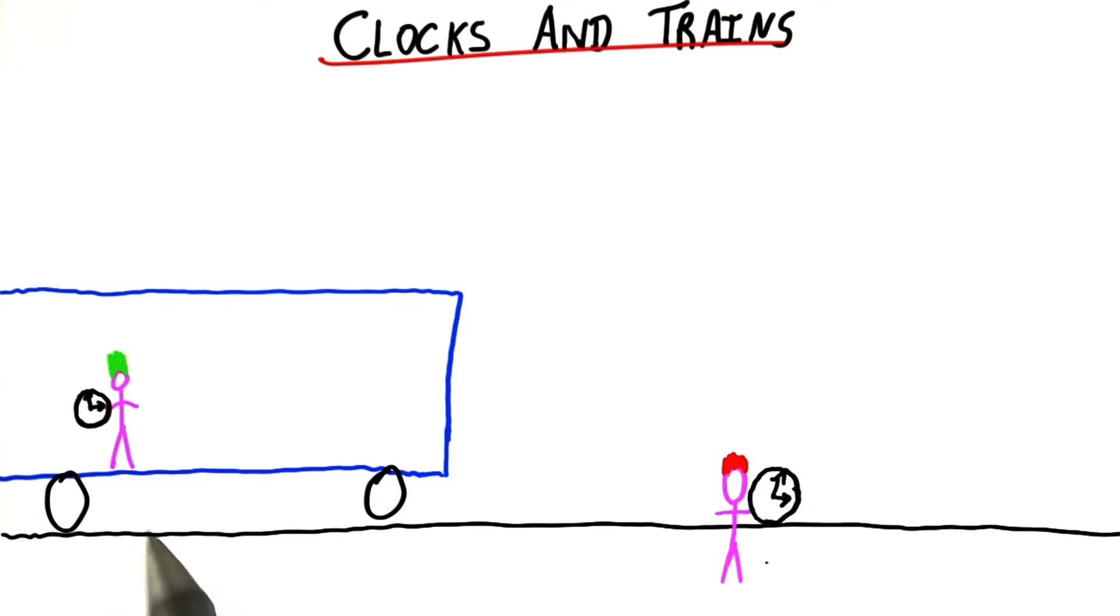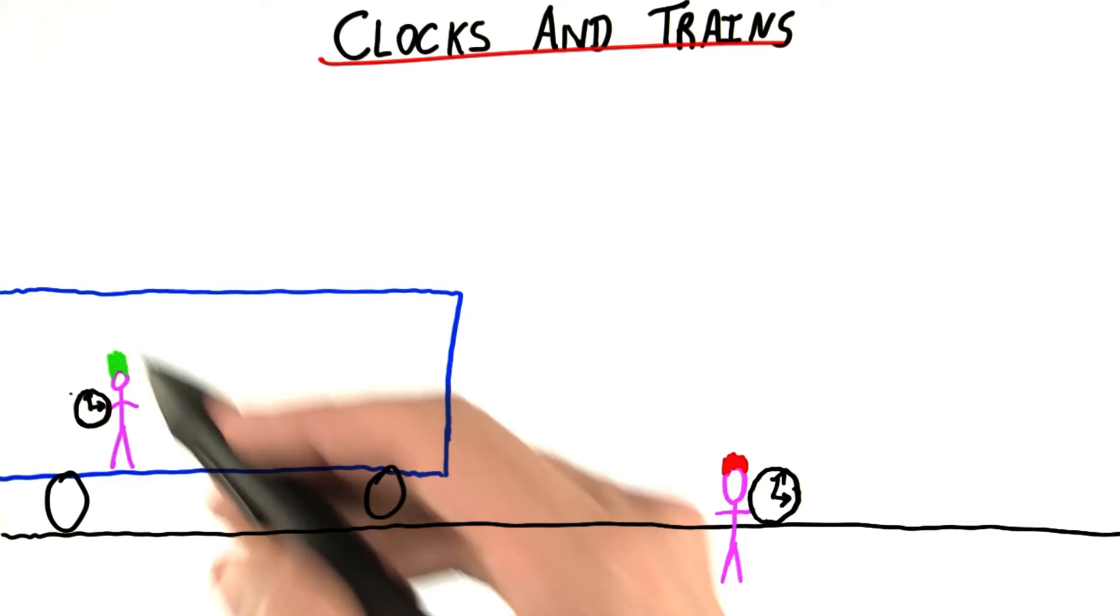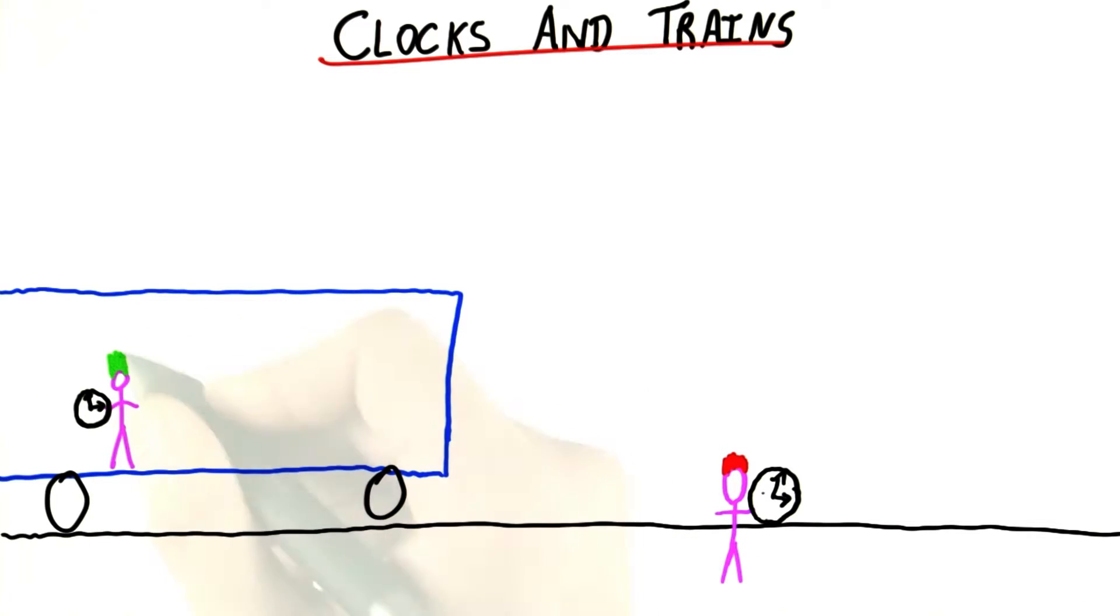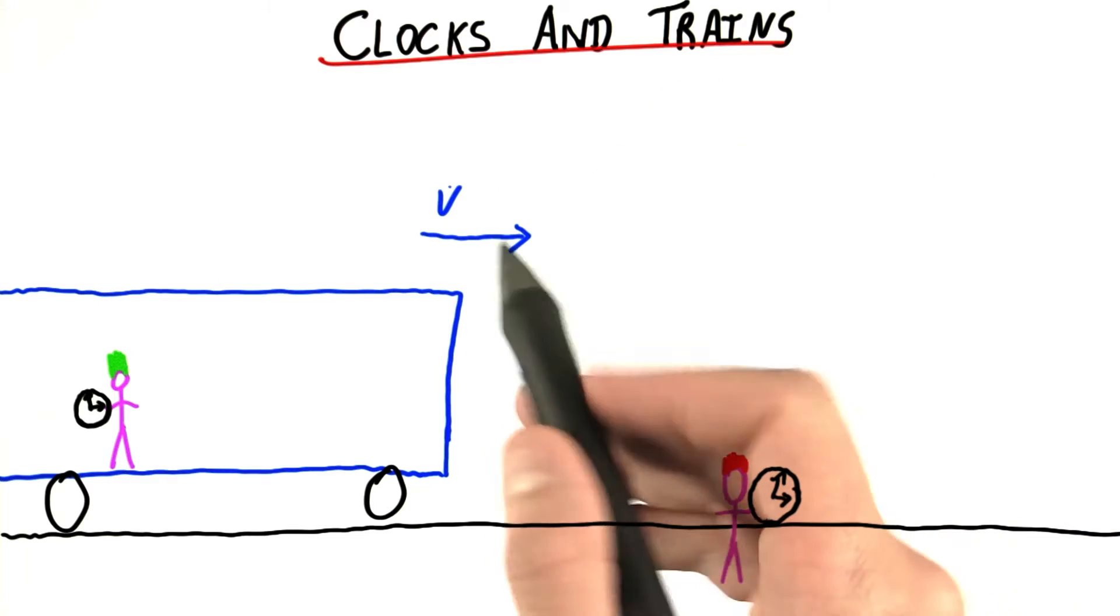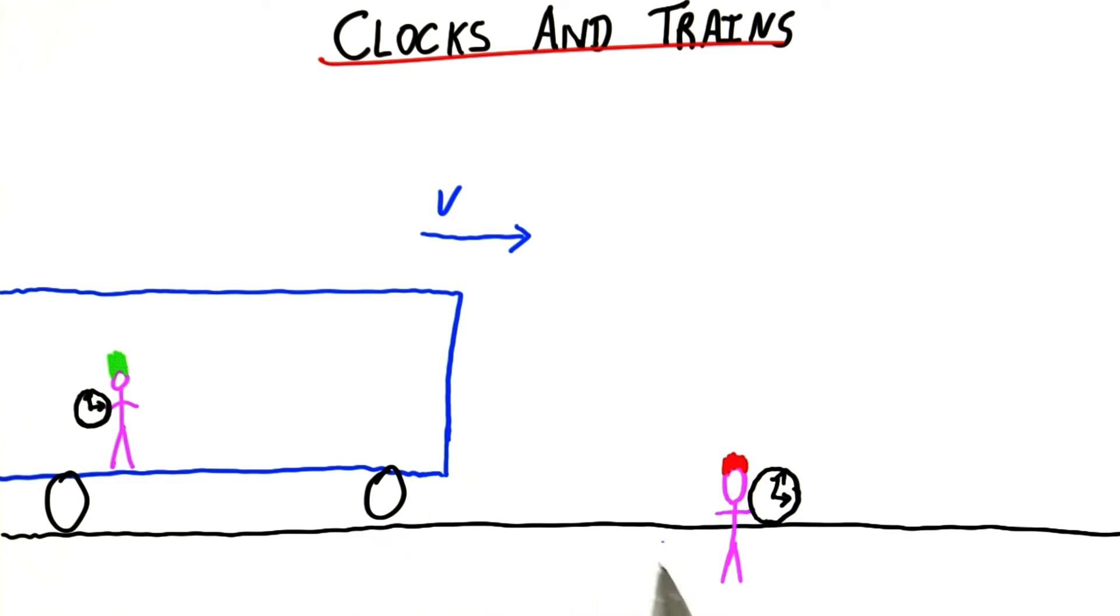Joining this train are clocks held by two observers, green and red. I don't know why, but their parents named them after the color of their hair. What's going to happen here is that green, while standing on this train, and the train is moving with some velocity v relative to the ground.